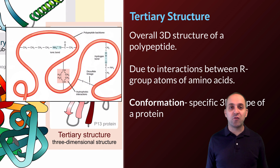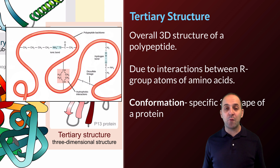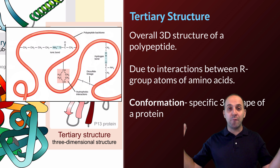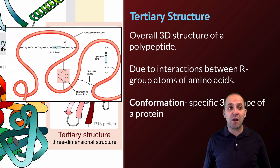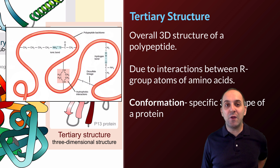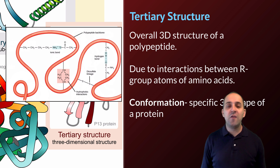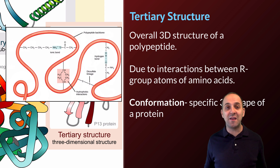When we move up to tertiary structure, we're referring to the overall specific three-dimensional structure of the polypeptide chain. This is due to the interactions between the R groups of the different amino acids. Some R groups will be repelled from the watery environment and will orient themselves inside of the polypeptide chain, away from the aqueous environment of the cell. Others will be attracted to it, some will be attracted to each other, positively charged R groups will be attracted to negatively charged ones, we'll get hydrogen bonds between polar R groups, and we'll even get full covalent bonds between the sulfurs of cysteine residues, making structures known as disulfide bridges. The sum total of these interactions leads to the overall three-dimensional shape of a particular polypeptide chain.